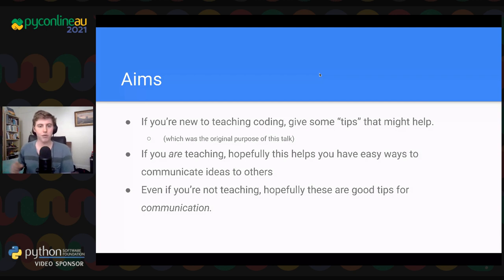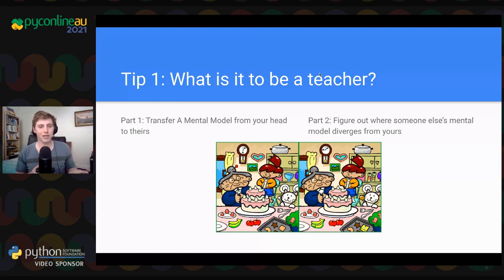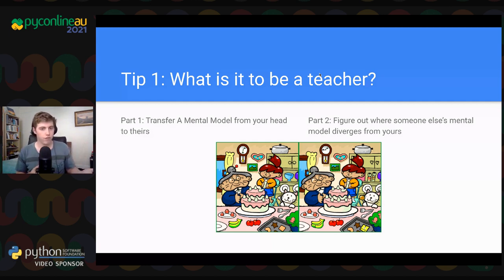My first tip is simple: what is it to be a teacher? I think teaching breaks down into two parts. The first is transferring a mental model from your head into another person's head. The second is figuring out where somebody else's mental model diverges from yours. A mental model is a way of explaining the world — for instance, a variable is just a thing inside a box that you can change out, with a name you can refer to.